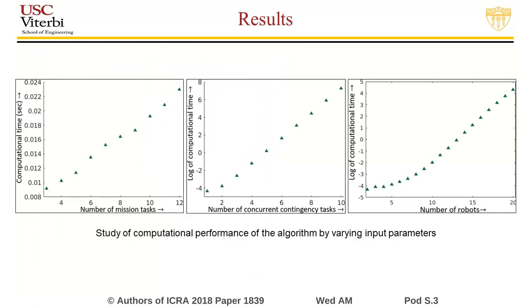We vary factors like number of mission tasks, number of contingency tasks, and number of robots, and record the time taken. Time increases linearly with mission tasks and exponentially with contingency tasks.